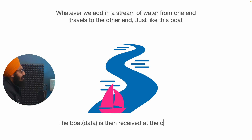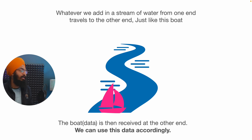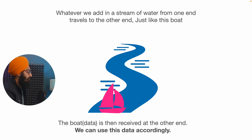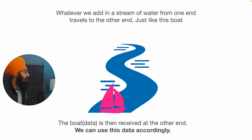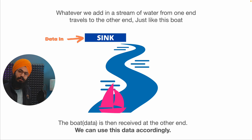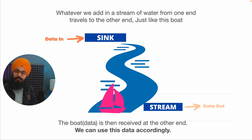Once we receive this data — represented by the boat — we can use it accordingly in our UI. In this stream we have two ends: one is the starting point and the other is where we receive the boat. Technically speaking, we have two important terms when dealing with streams: Sink and Stream itself. Let's see that with the diagram.